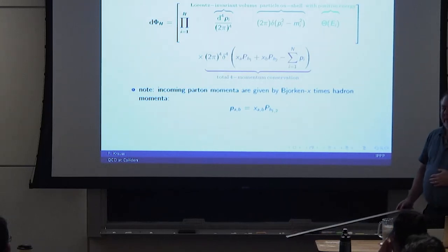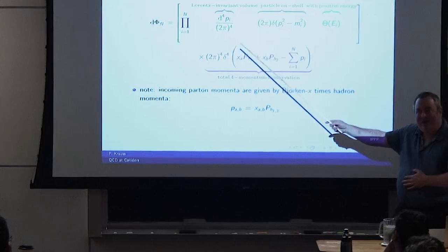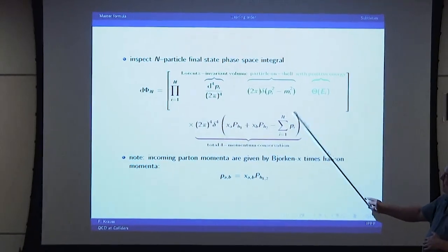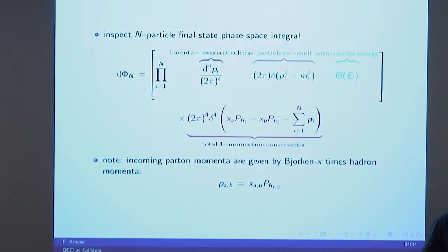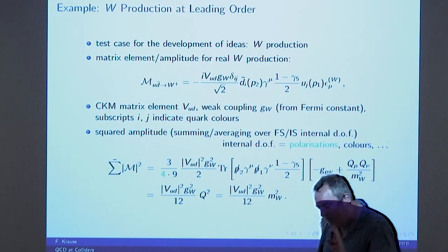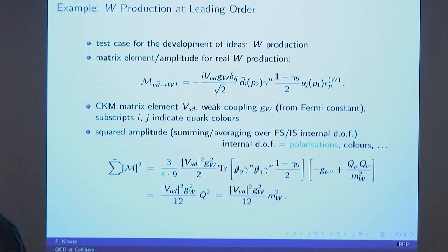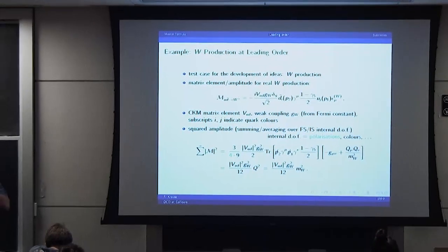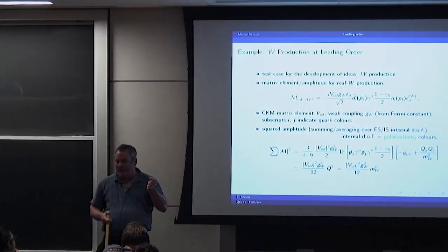For those of you who've never done a final state phase-space integral: you have a Lorentz-invariant volume, on-shell conditions, positive energies, and total four-momentum conservation. Now I'm not going to bore you — unless you make me — telling you what wonderful methods we have developed to do this automatically. But I want to take a very simple process, do a very quick calculation, because it's not really hard, and show you why it's a good one and what you learn from it.